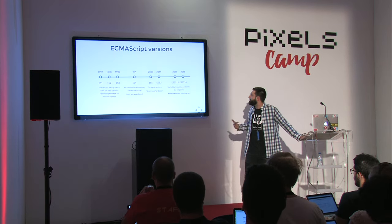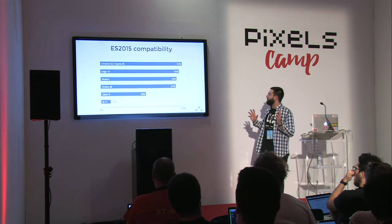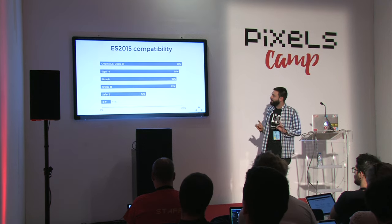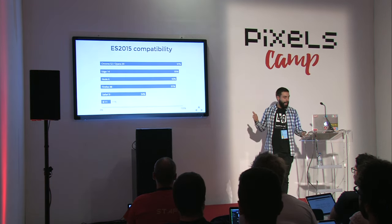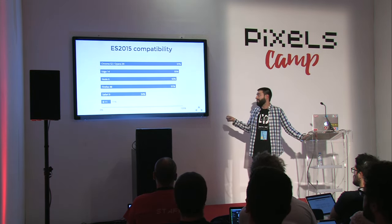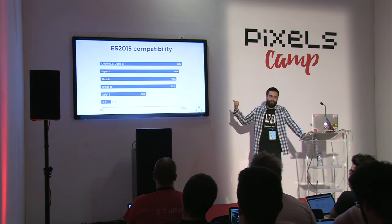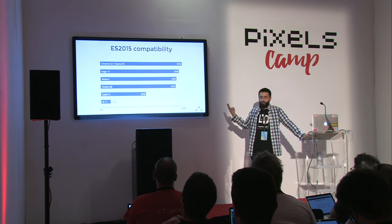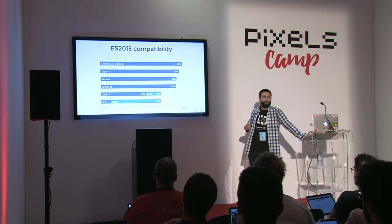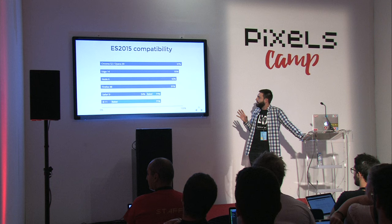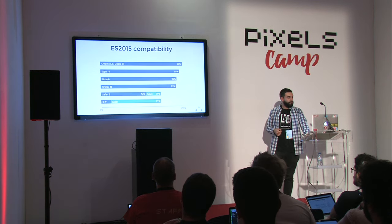From now on we're supposed to have yearly iterations on the language. In terms of compatibility, most major browsers almost have full ES6 support, but Safari is still lagging behind and users stuck on IE11 won't automatically upgrade to Edge. Because of these two issues I'd recommend using a transpiler — Babel is probably the most famous one. It converts your ECMAScript 6 code back to ECMAScript 5 to give compatibility to those browsers.